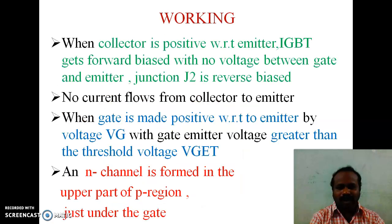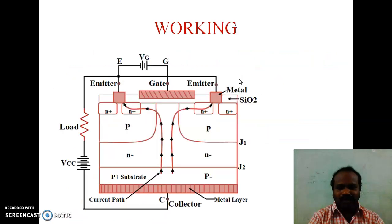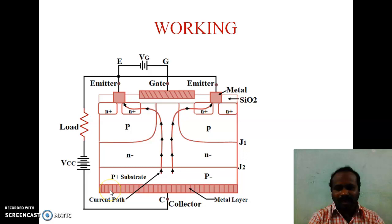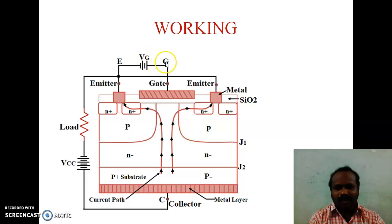Working of IGBT: When the collector is positive with respect to emitter, IGBT gets forward biased with no voltage between gate and emitter. Junction J2 is reverse biased. The collector is made positive with respect to the emitter, so the IGBT is in forward bias condition. But the gate voltage is zero. Because the gate voltage is zero, junction J2 is at reverse bias condition.